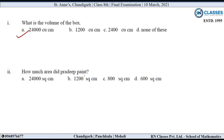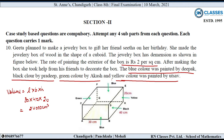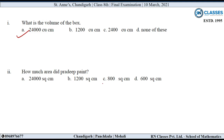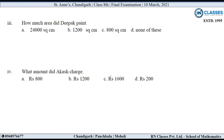Second sub-question: How much area did Pradeep paint? Pradeep ने black color से paint किया, जो इस surface पर है। इस surface का area = 40 into 20 = 800 cm square. So option C is correct.